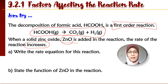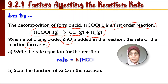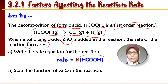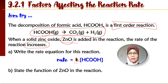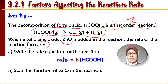Zinc oxide hanya mengubah rate sahaja, dia tidak ada dalam reaction. So, write the rate equation for this reaction. Rate equals K times concentration of the reactant. Reactantnya satu sahaja, dan concentration of the reactant to the power of its order. Order telah diberi — it is a first order reaction. Jadi letak order satu di sana. Ini adalah rate equation untuk this reaction.